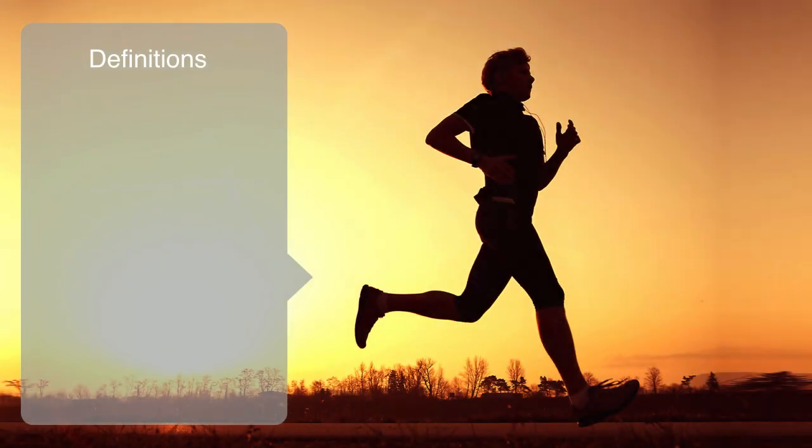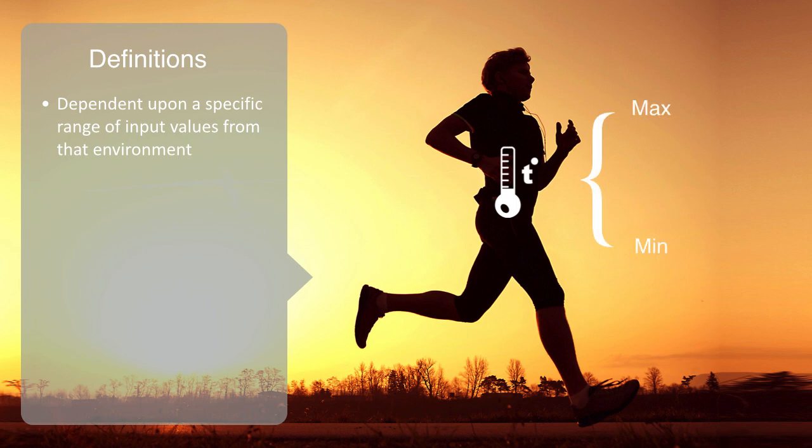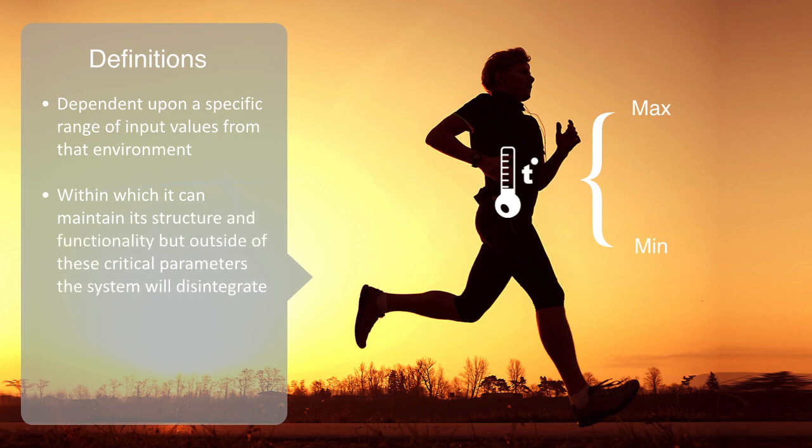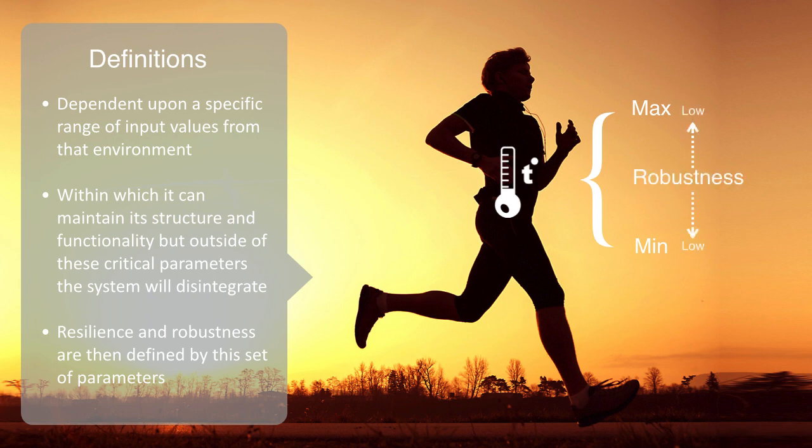All systems exist within an environment and are to a certain extent dependent upon a specific range of input values from that environment. The system has a set of parameters to these inputs within which it can maintain its structure and functionality, but outside of these critical parameters, the system will disintegrate, becoming degraded to a lower level of integration or functionality. Resilience and robustness are then defined by this set of parameters. The lower the system's dependency upon its environment and the broader this range of input values that the system can operate within, the more robust it can be said to be.